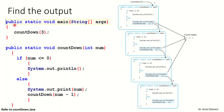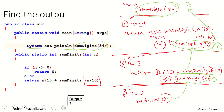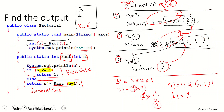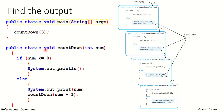In this example of a recursive method, starting from the main method, we call a method named countdown and send it the number three. Countdown takes an integer and it is a void method. This is different from the previous methods we did — in those, we always had a return, such as returning an integer representing a summation or a factorial.